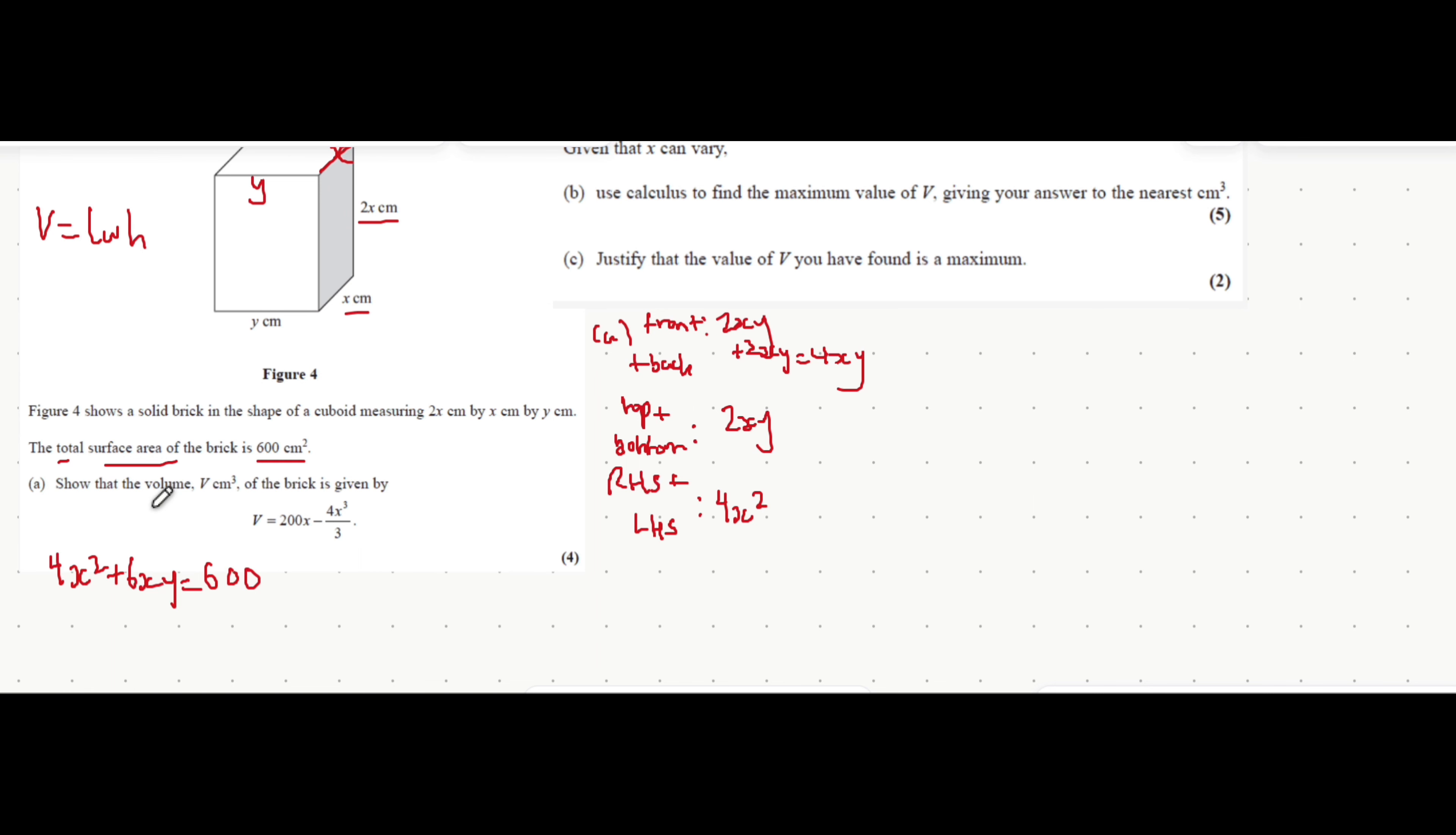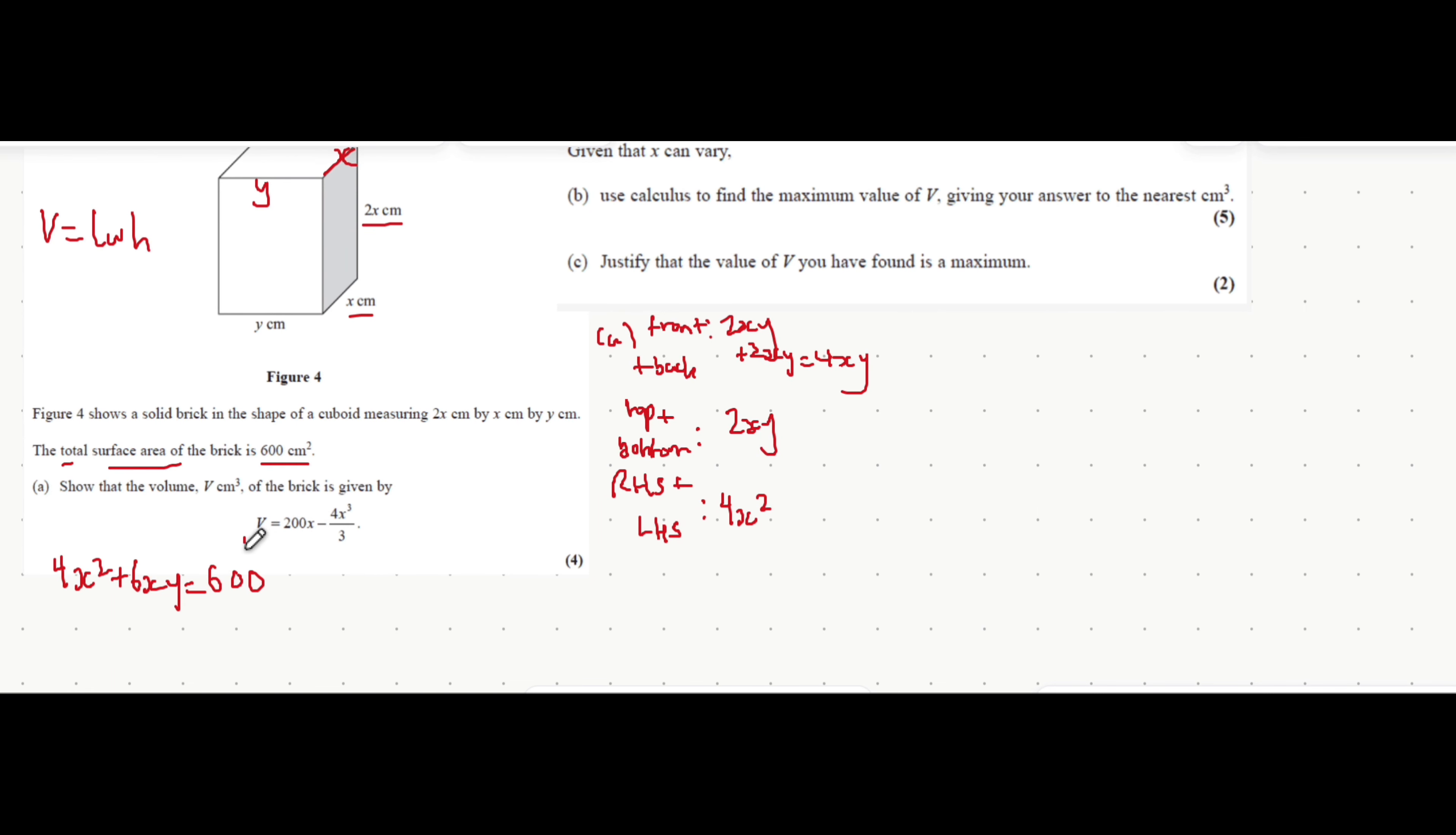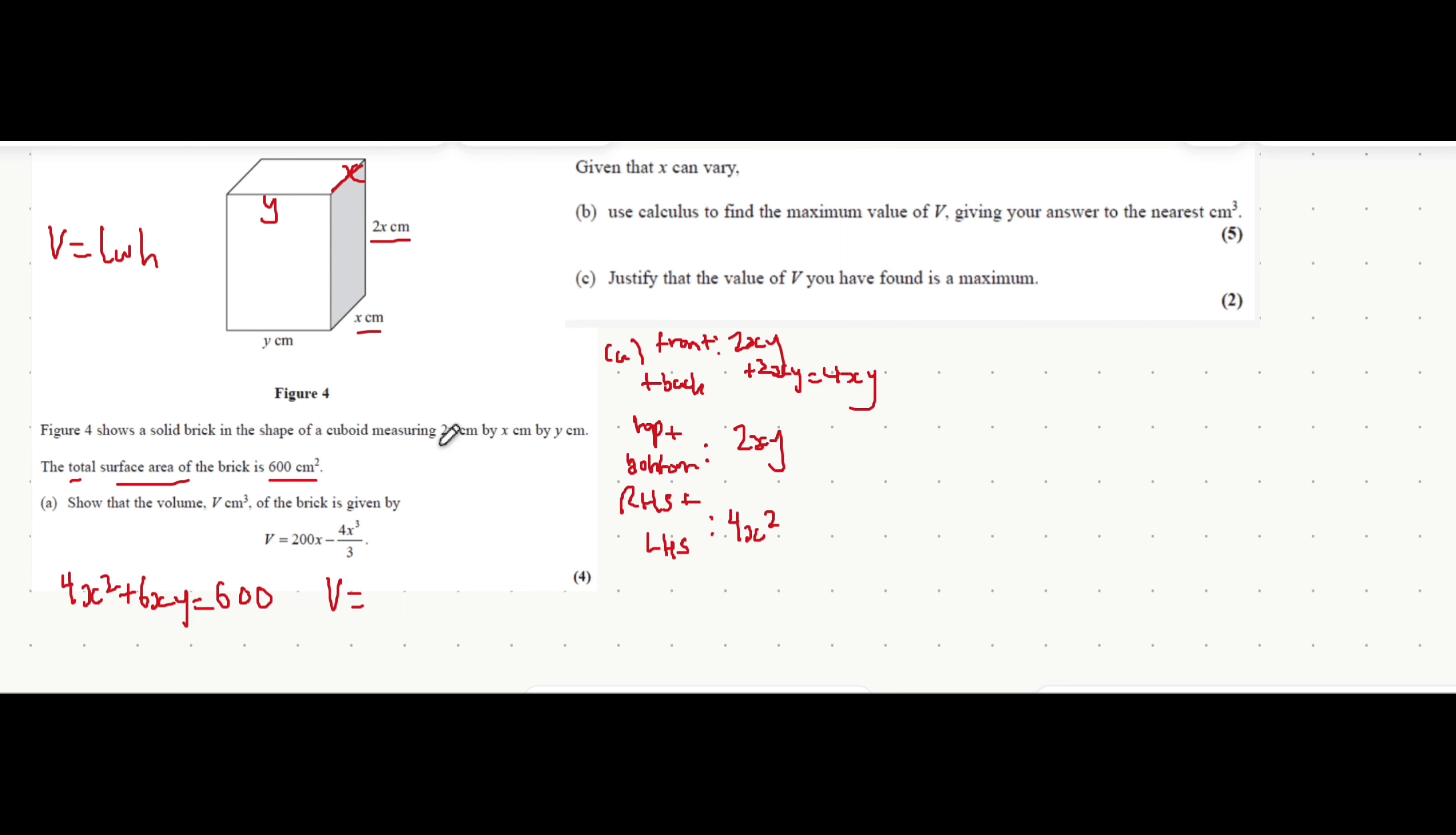Now it's asked us to find the volume and to show that the volume is given by this equation here. The volume we know is length times width times height, so it's y times x times 2x. 2x times x is 2x squared times y is 2x squared y. If we look at the final answer for the volume we realize there's no y in any of the variables. That means you have to replace y somehow.